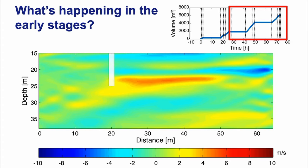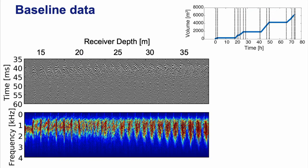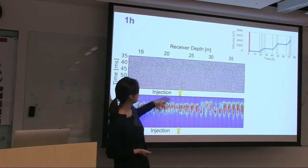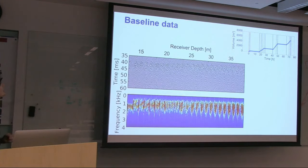What happened before 26 hours? The data from 1 hour after injection start shows a significant change in the waveform. Our expectation was to see high frequency attenuation from injecting air, but instead we see loss of low frequencies. When comparing baseline data to one hour data, there's a lot of vibration in the waveform and significant spectral loss.